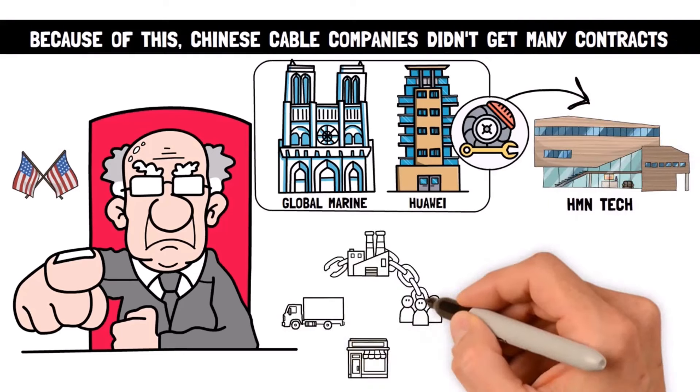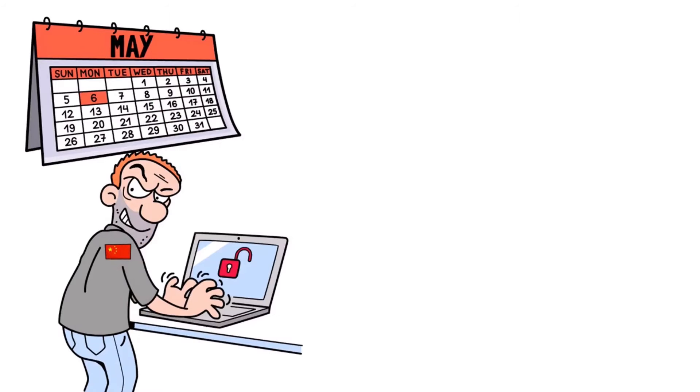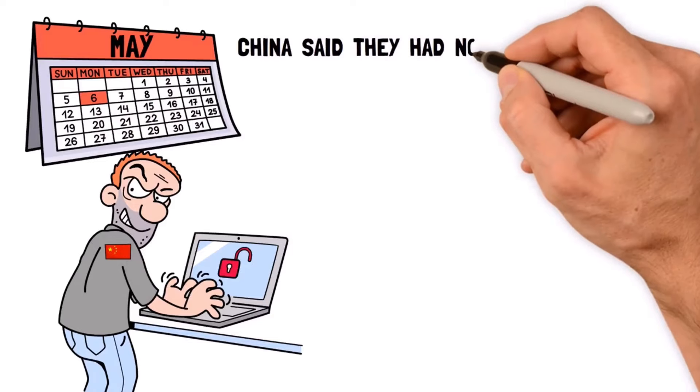In 2022, Chinese ships fixed cables that belong to AT&T, Verizon, and Microsoft in the East China Sea. Then in May, Microsoft said they were pretty sure that hackers, maybe from China, got into their telecom stuff. China said they had nothing to do with it.